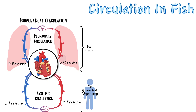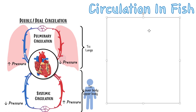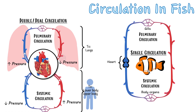That's crucial to understand because fish are different — fish have single circulation. Our heart has four chambers because we have a double circulation, but a fish only has two chambers. Look at how it works: the fish heart pumps blood all the way to the gills. The gills are like the lungs of a fish — a specialized area that extracts oxygen from water.